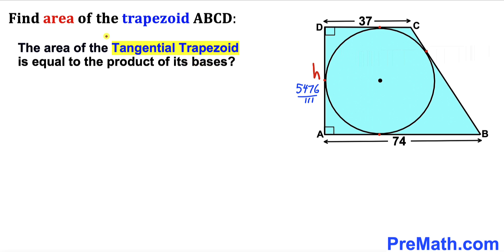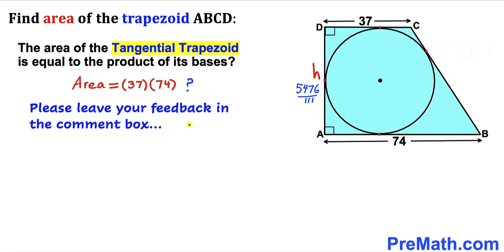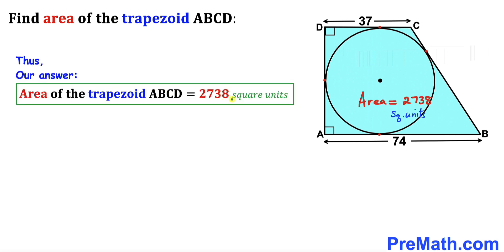Here's your bonus question: the area of the tangential trapezoid — is it equal to the product of its bases, i.e., 37 times 74? Please leave your feedback in the comment box below. The area of the blue shaded trapezoid ABCD is 2738 square units. Thanks for watching, and please don't forget to subscribe to my channel for more exciting videos!